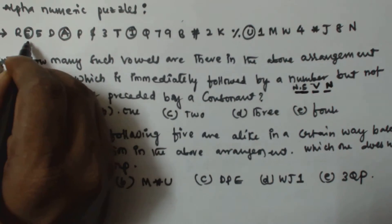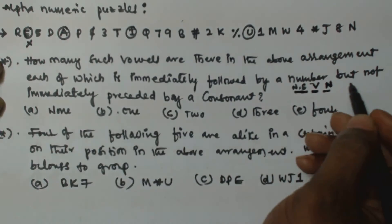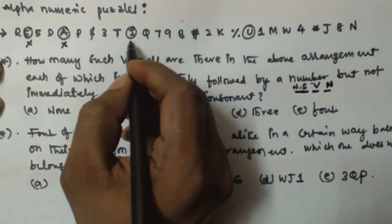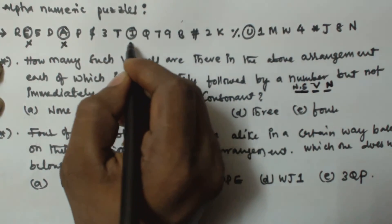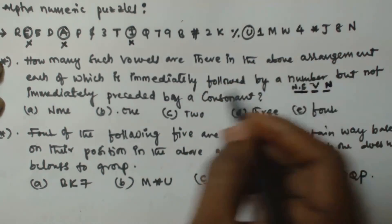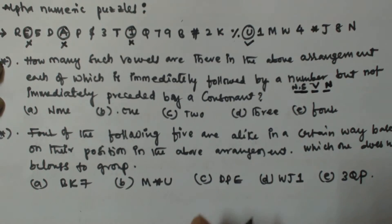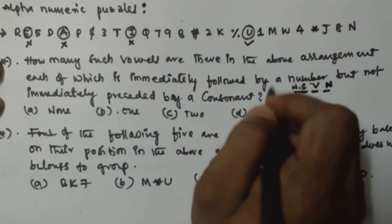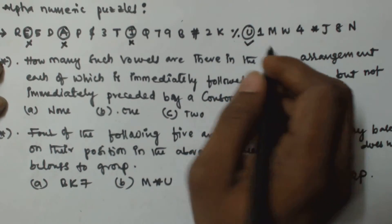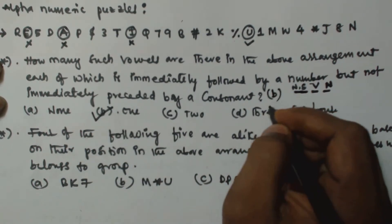Checking each vowel: 'e' is preceded by a consonant, so it fails. 'a' is also preceded by a consonant, so it fails. 'i' is preceded by a consonant, so it fails too. But 'u' is preceded by a symbol (%), and it is followed by 1 (a number), so it satisfies the condition. Out of four vowels, only one satisfies the criteria.